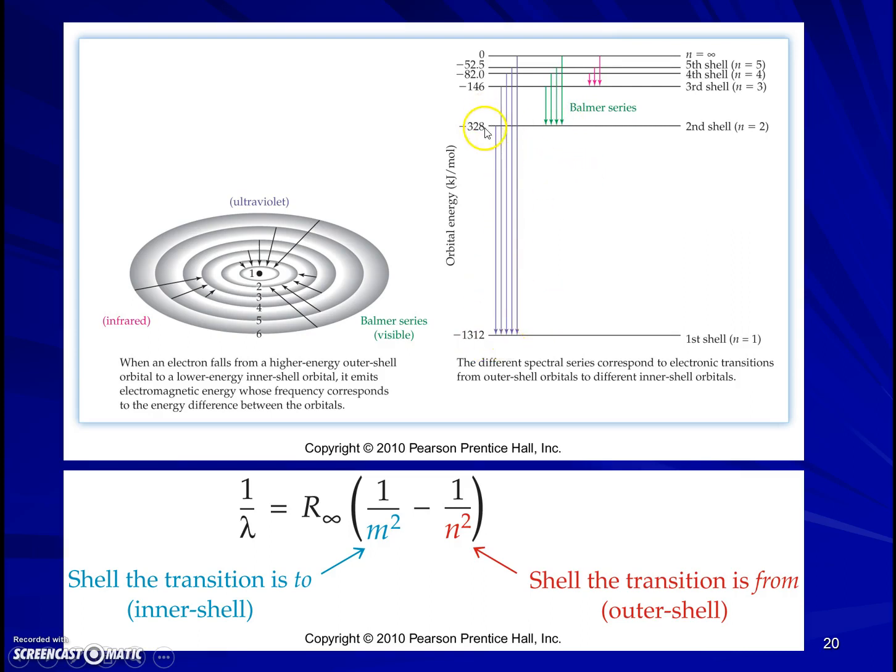Now what we couldn't see in that spectrum was transitions from excited electrons that were in energy level two or higher down to energy level one. That's not because they weren't happening. But it's because this energy amount is large enough that the wavelength or the frequency of the light that's emitted is beyond what we can see. It's ultraviolet. And so the hydrogen atom spectrum includes ultraviolet radiation that we can't see with our eyes, as well as the four visible peaks we could see from the Balmer series.